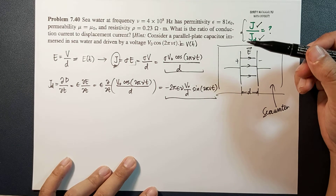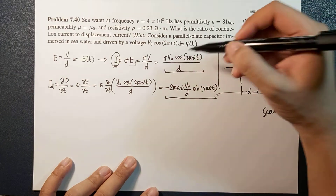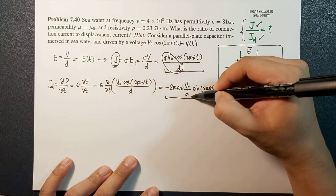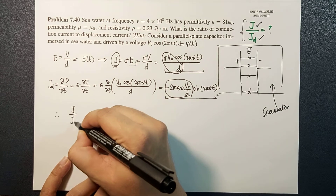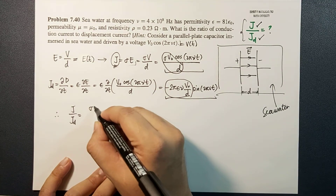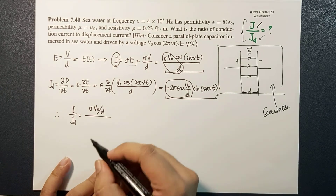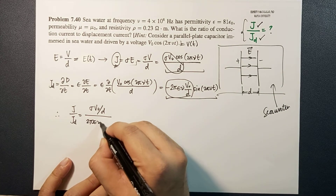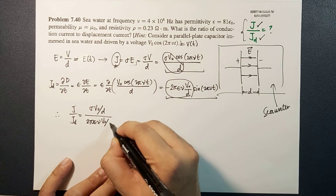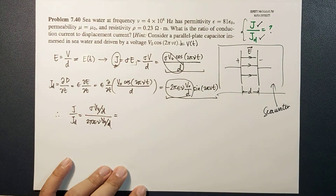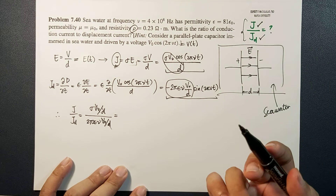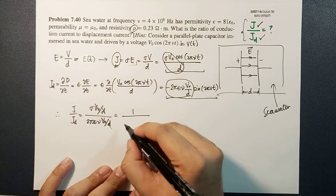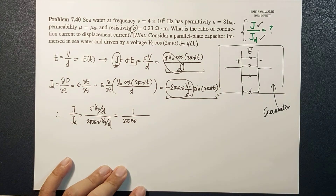We only look at the amplitudes since we want the ratio. The amplitude of j is σV₀/d and the amplitude of jd is 2πεν·V₀/d. So j/jd = σ/(2πεν). Since σ = 1/ρ, this simplifies to j/jd = 1/(2πεν·ρ).